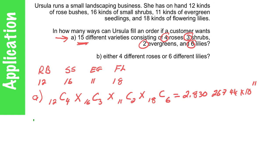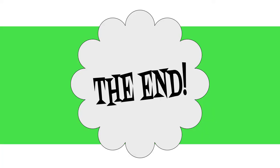So in part B, we want either 4 different roses or 6 different lilies. So in this case, we're choosing from a group of 12, we're choosing 4 of those, or becomes addition. From a group of 18, we are choosing 6. Add those up, and it's 19,059. Hope that was useful. Thanks for listening.